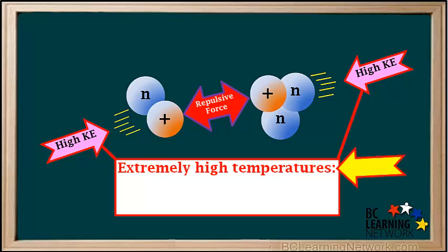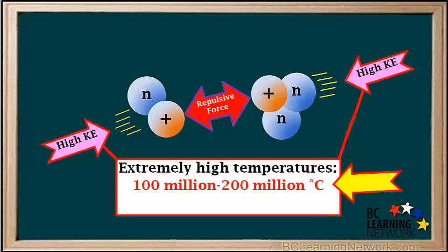Kinetic energy is temperature, so to achieve fusion of deuterium and tritium, extremely high temperatures are required. Typically, this reaction needs temperatures between 100 million and 200 million degrees Celsius.